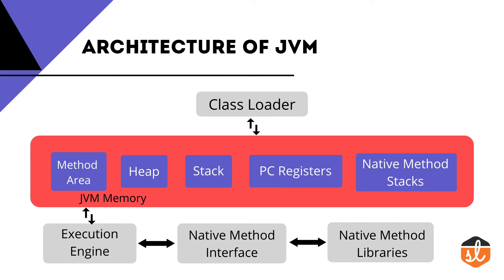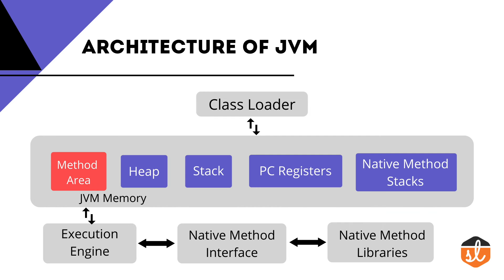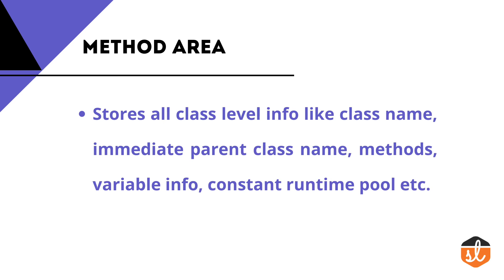The second component is Java Memory. Inside Java Memory there are several components. First is the Method Area, which contains all class-level information such as class name, immediate parent class name, methods, variable information, and the constant runtime pool.